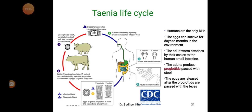Humans are the only definitive host. Eggs can survive for days to two months in the environment. The adult worm attaches by the scolex to the human small intestine. The adult produces proglotids, which pass with stools. The eggs are released after the proglotids are passed. The segmented forms are called proglotids.